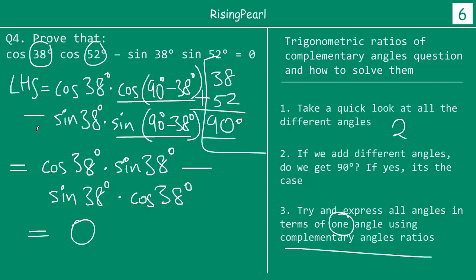So friends, even though we do not know the trigonometric ratios for angles like 38°, 52°, 48°, 42°, 65°, and 25°, we can definitely solve these questions using complementary angle ratios. Thank you very much for joining us.